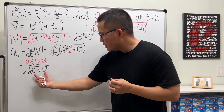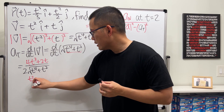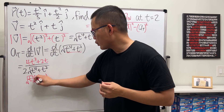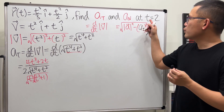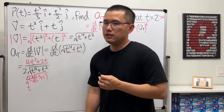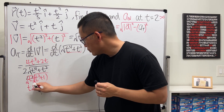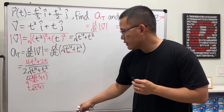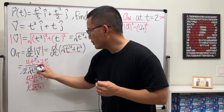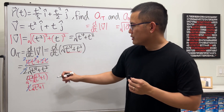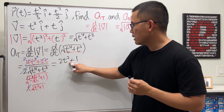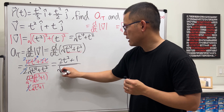We can simplify this. Inside the square root, factor out t²: we get t²(t² + 1), so the square root becomes t times the square root of t² + 1, since t > 0 when t = 2, so no absolute value is needed. We can then cancel t from numerator and denominator, and cancel the 2s so the 4 becomes a 2.